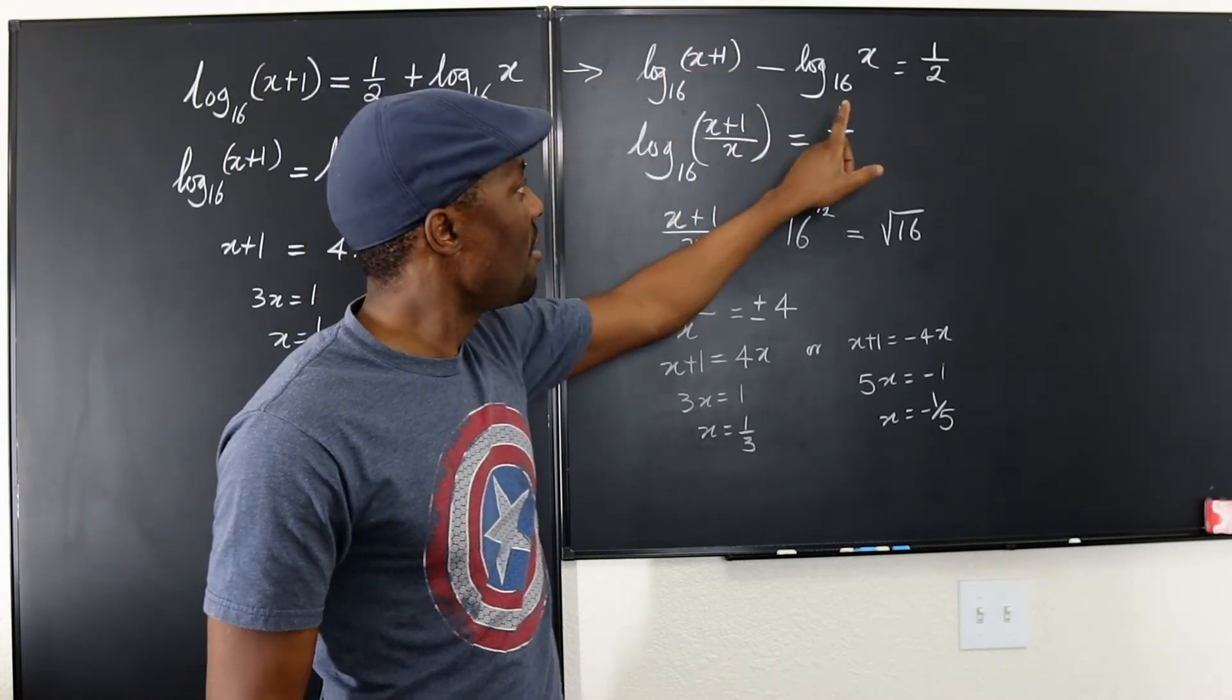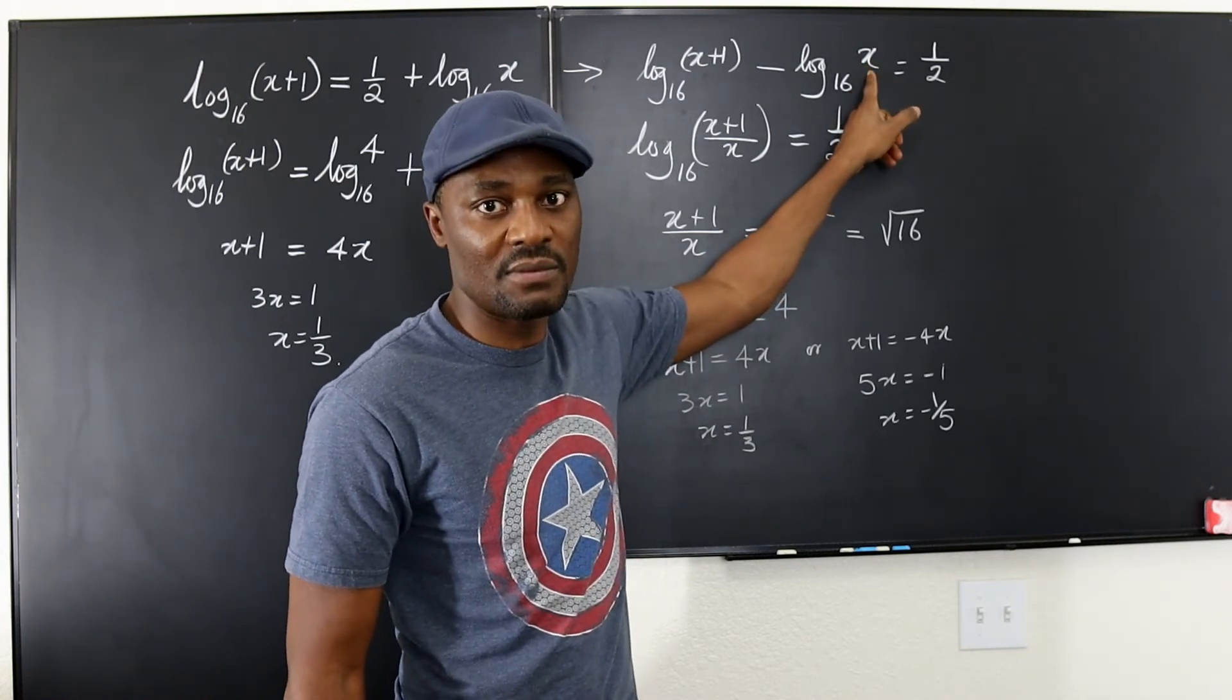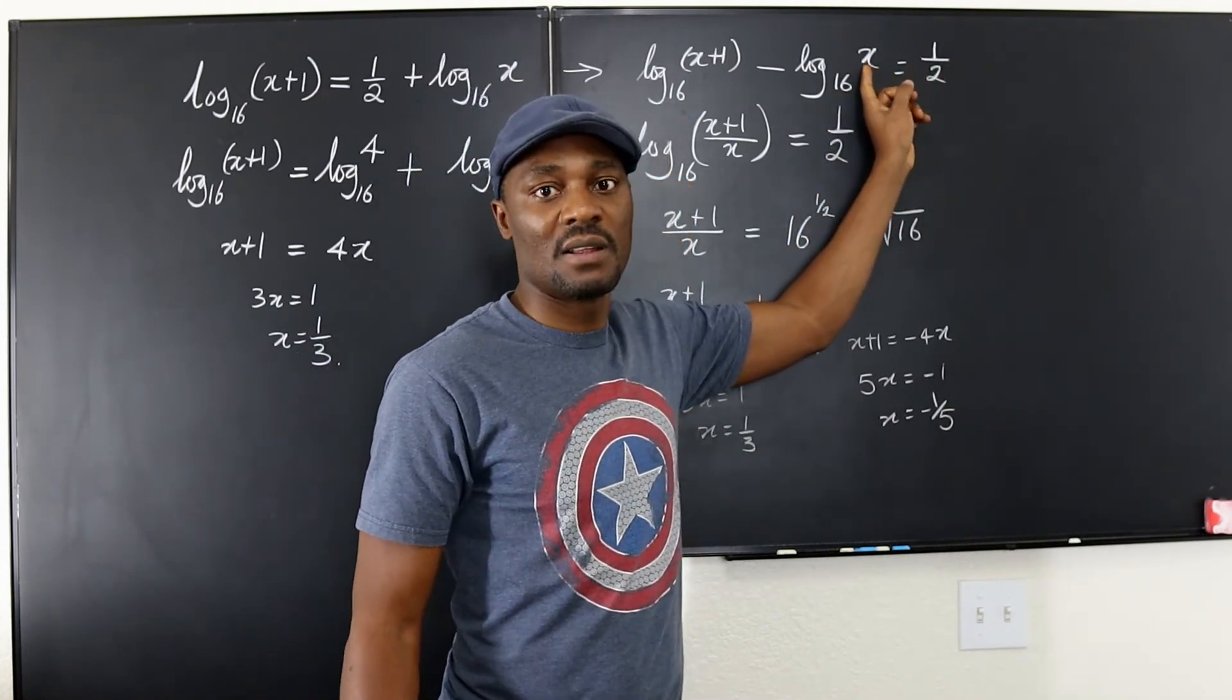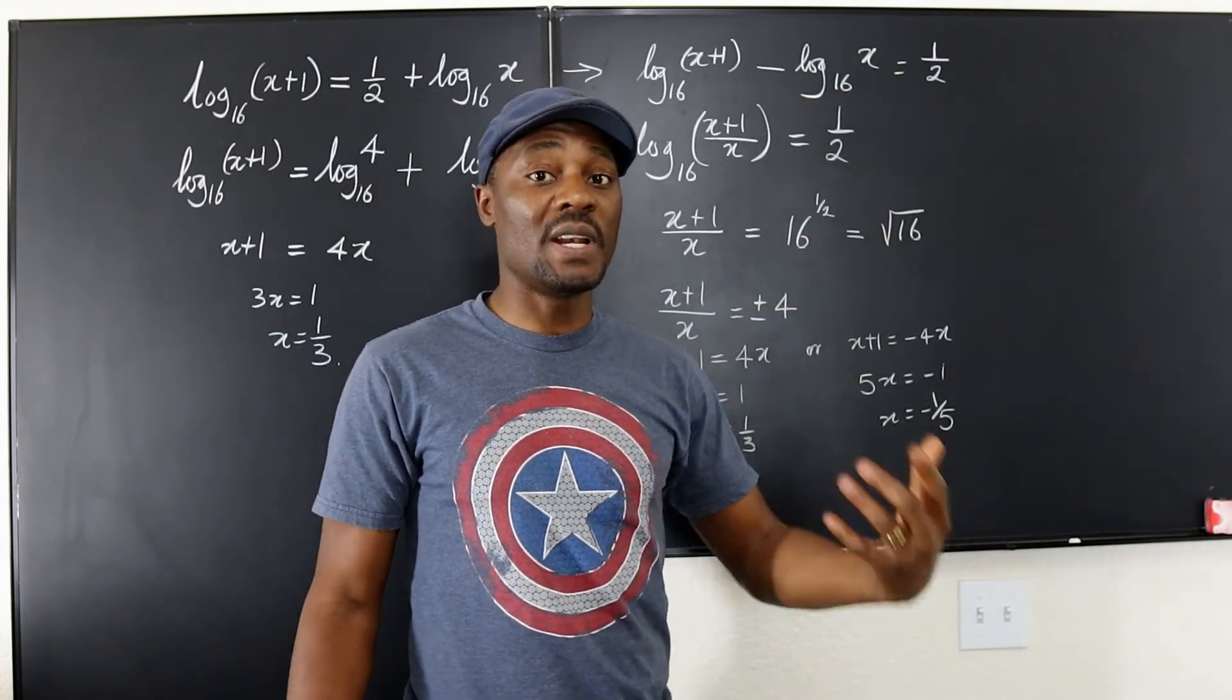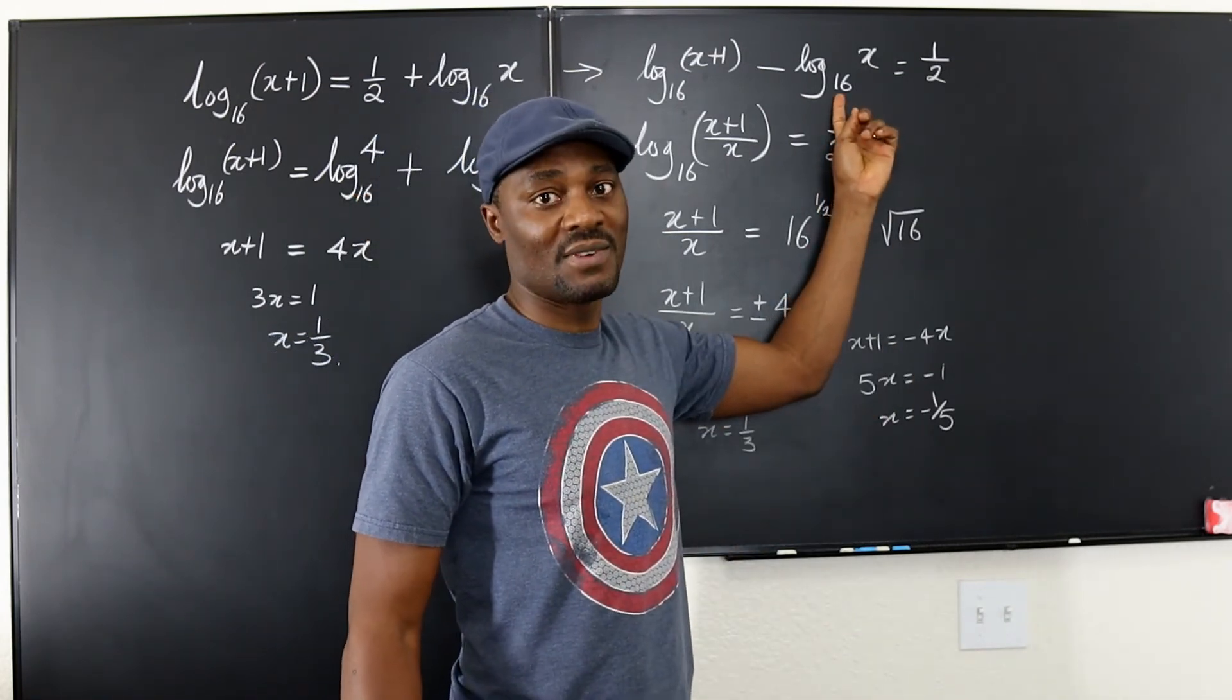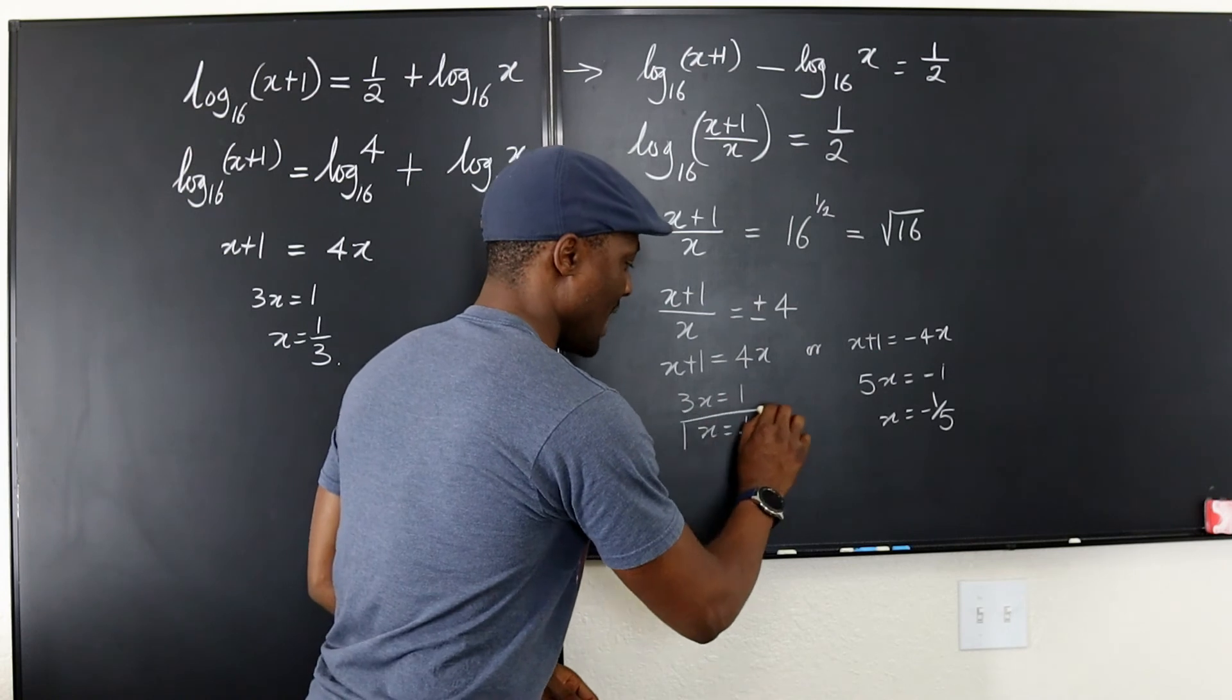So it's good for this side, but if you try it here, it doesn't work because it's just negative 1 over 5. And the argument can never be negative. The reason being that you cannot raise 16 to anything to obtain a negative answer. The exponent of anything is either a fraction or an integer, but it's never negative. Unless, in itself, it was negative. The base cannot be negative. So that's the understanding of that. This is the only acceptable answer.